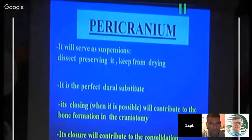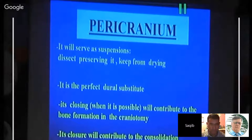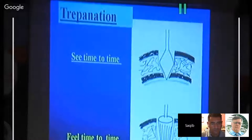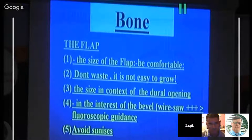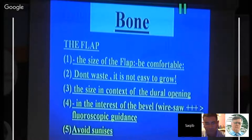Dissect and preserve the pericranium and keep it from drying, as it shrinks once dry. It is also an excellent substitute for dural grafts, and when replaced during closure it contributes to bone formation in the craniotomy site — especially in children. During trepanation, always check periodically where you are and feel whether you have reached the dura. The craniotomy flap should be of comfortable size — not too small or too large. Always save the bone you have cut, as it can be replaced. Keep the bone related to the size of the dural opening required and try to stay away from the sinuses.